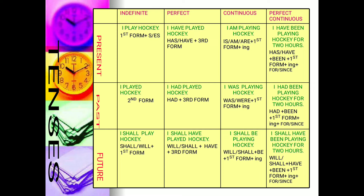Now, present perfect. In the perfect tense, we know perfectly the point of time we are referring to. 'I have played hockey' — main hockey khel chuka hoon. 'Hoon' means I am talking with reference to the present point of time. So I have played hockey — I know it was definitely before the present point of time.